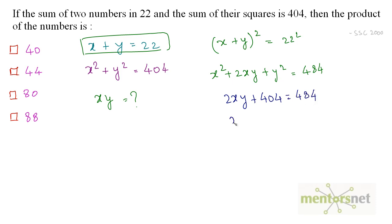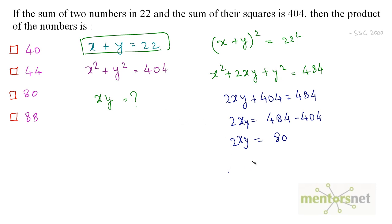So 2xy equals 484 minus 404, and 484 minus 404 equals 80. So 2xy equals 80. But we want the value of xy, so xy equals 80 divided by 2, which equals 40. So the answer is option A.